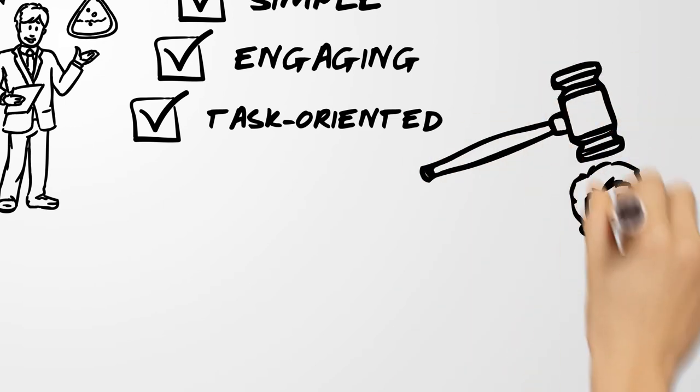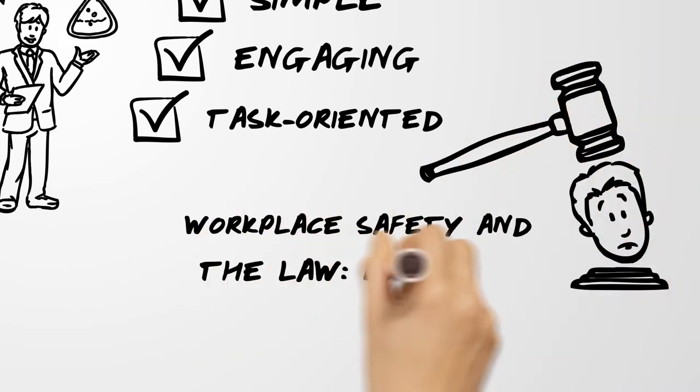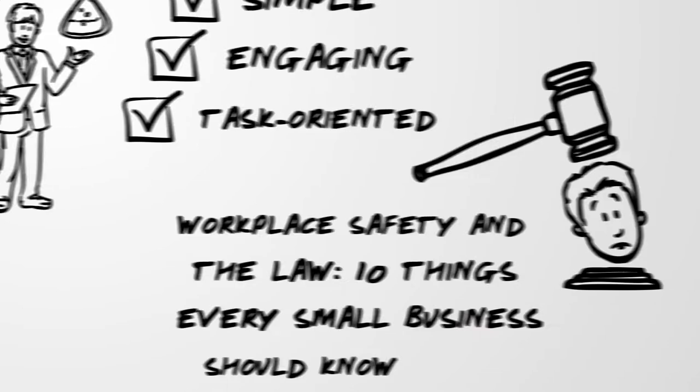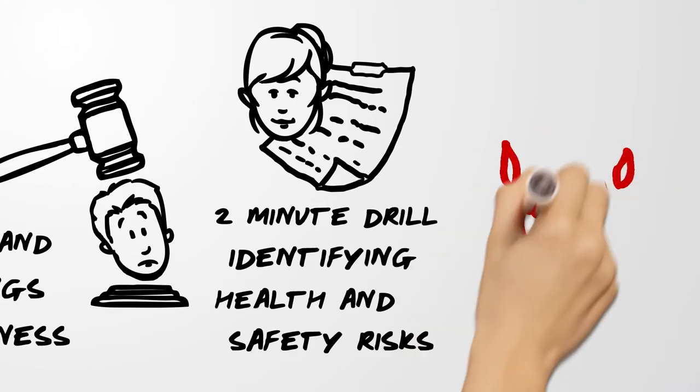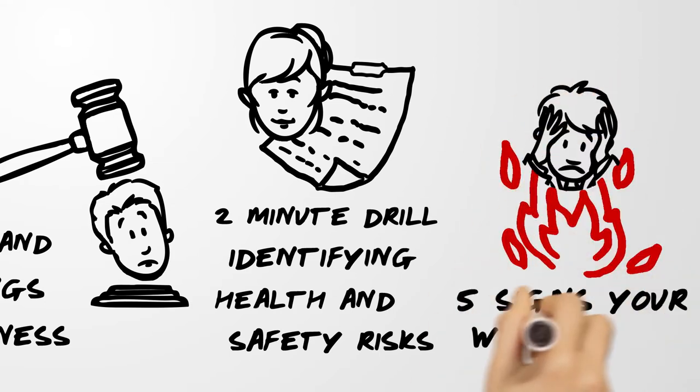So some of the headings that popped for them were workplace safety in the law, 10 things every small business should know, the two minute drill identify health and safety risks in your business, and five signs your workers are stressed out and what to do about it.